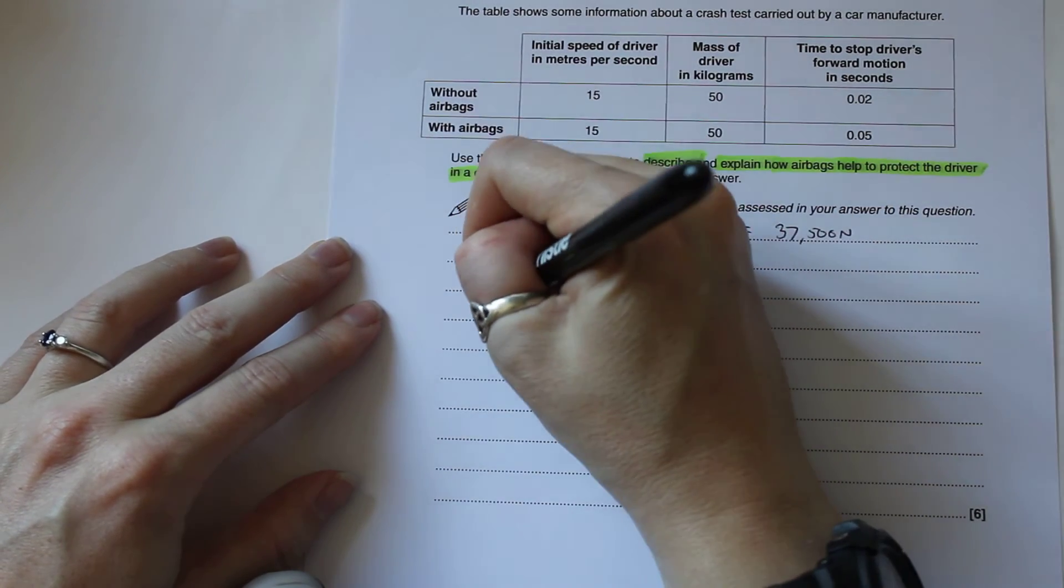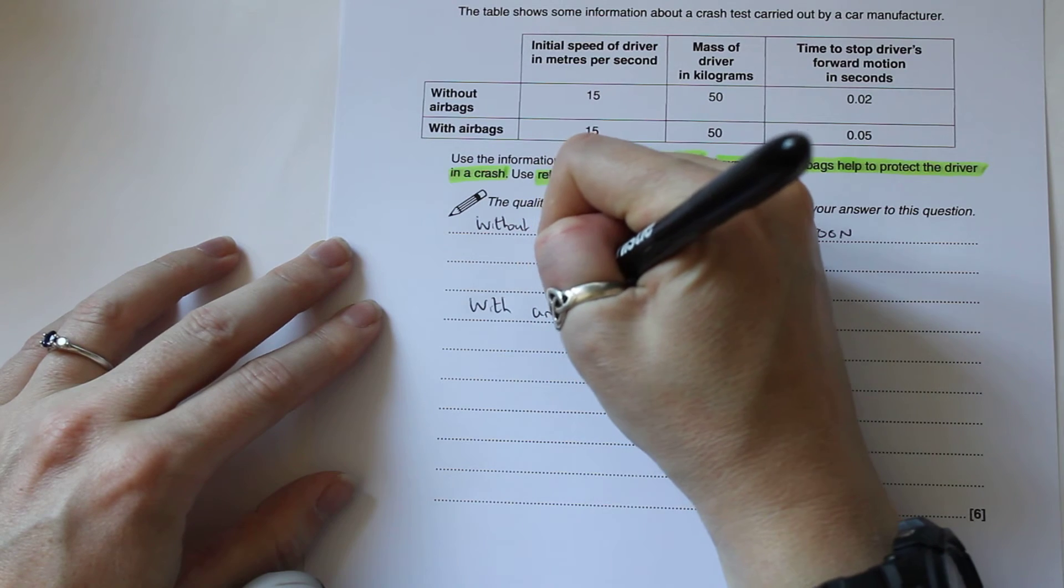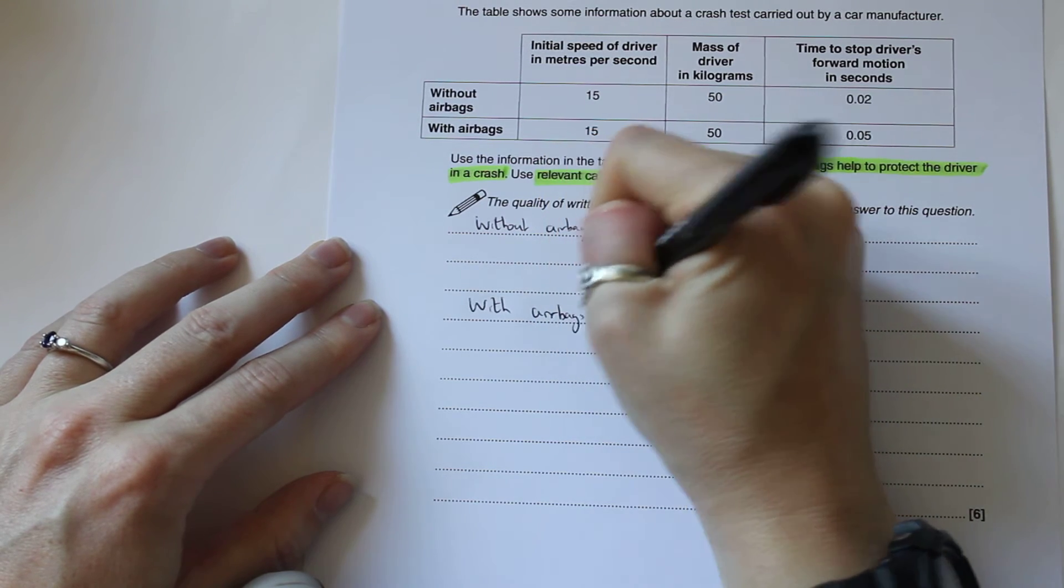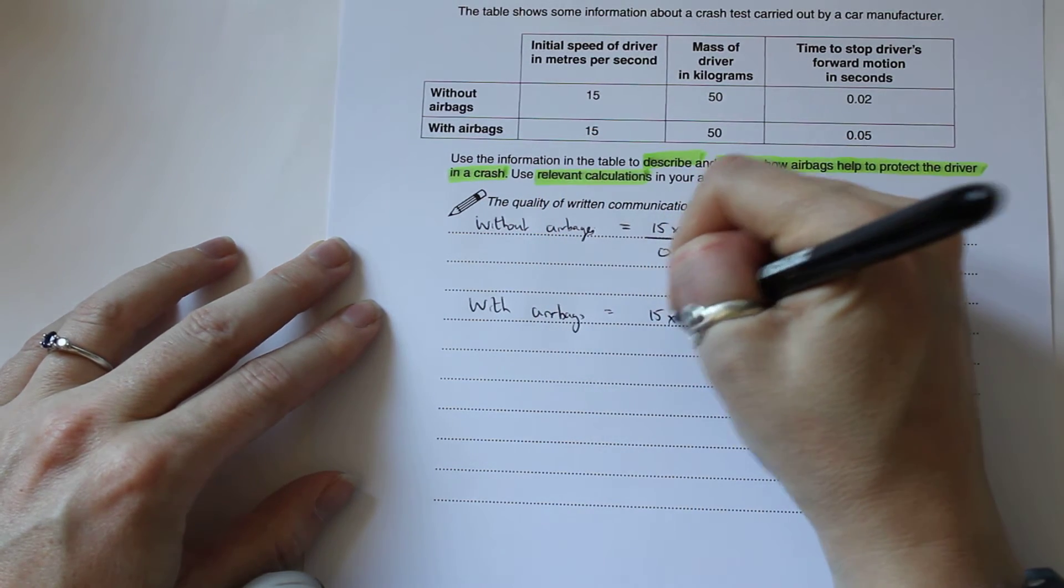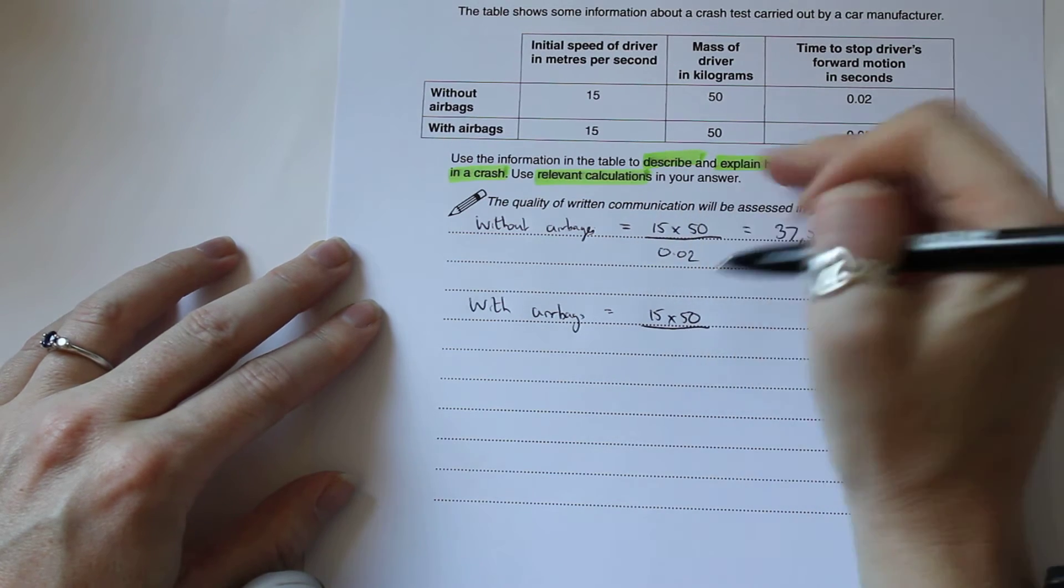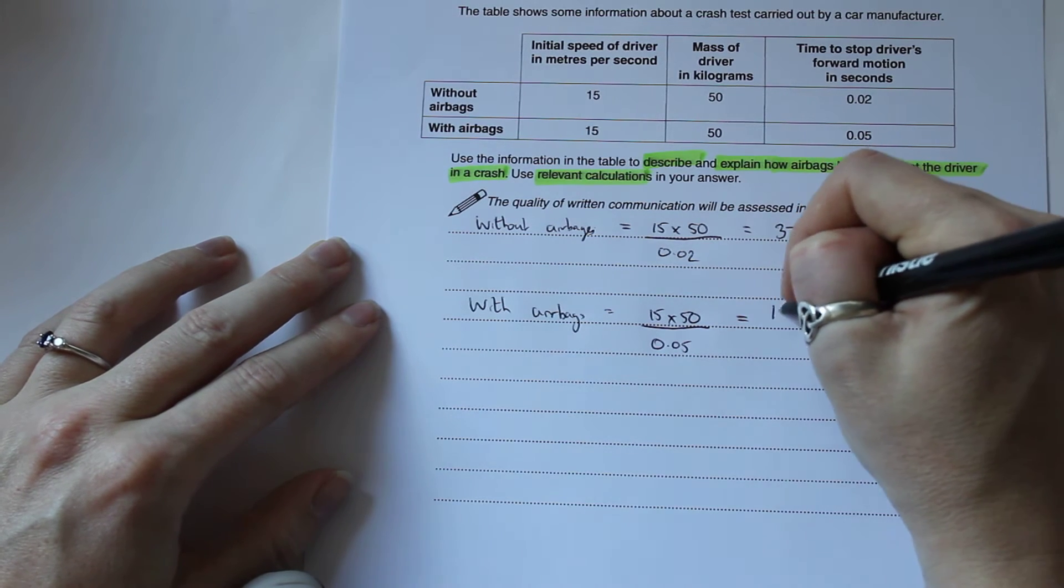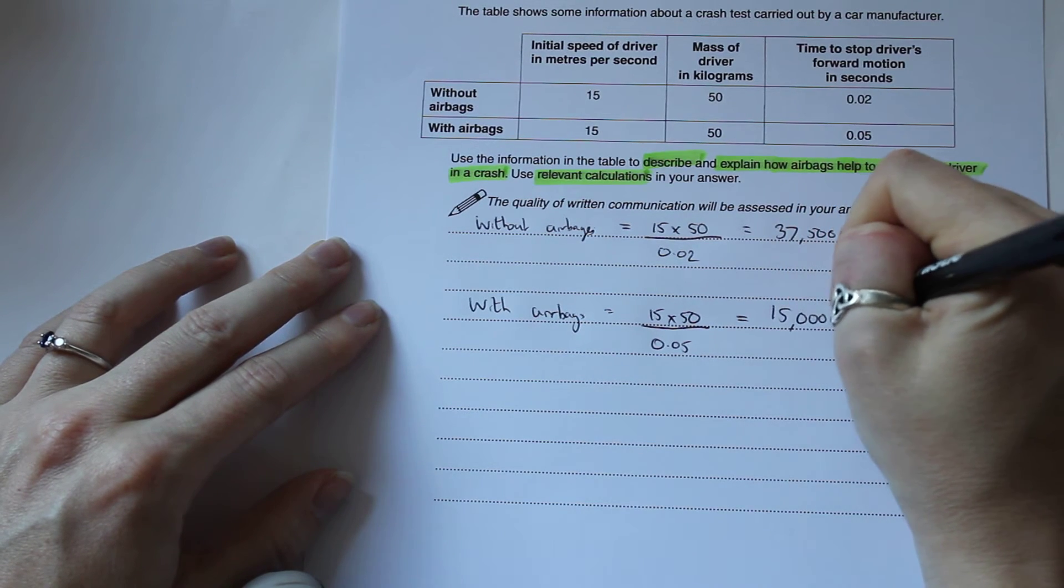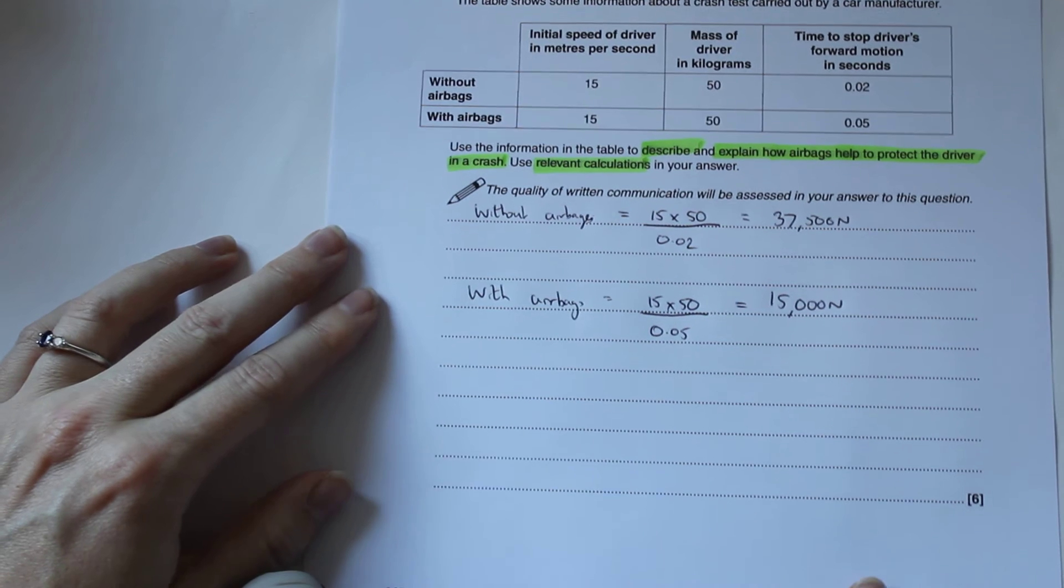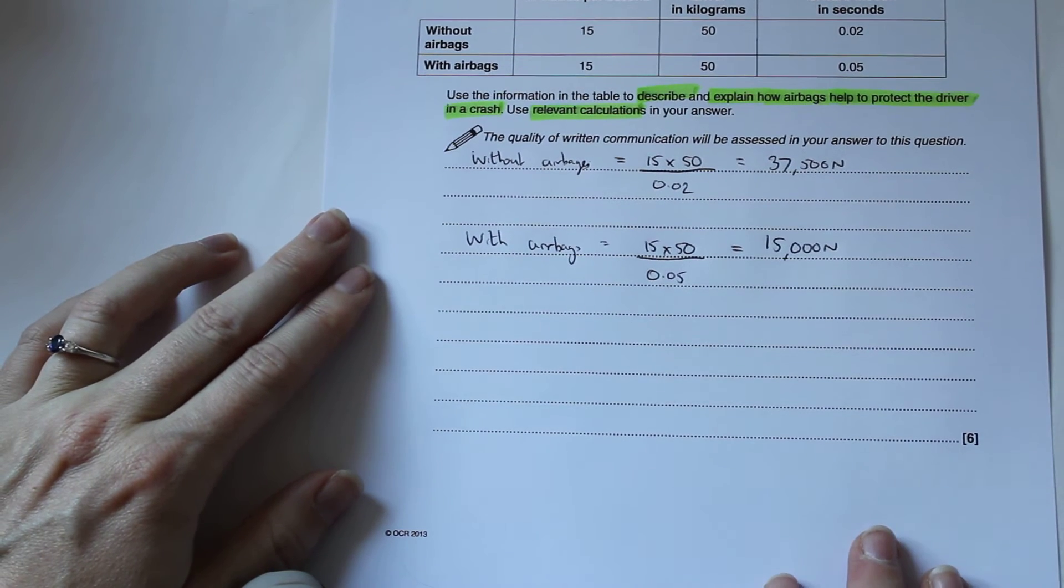Do the same for with airbags. The top part's the same, 15 times 50. The only thing that's different is the time, which is 0.05. That's going to give us a force of 15,000 newtons. So we've carried out the calculations first of all.